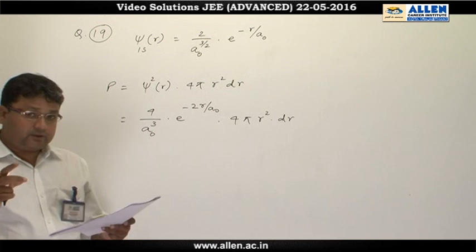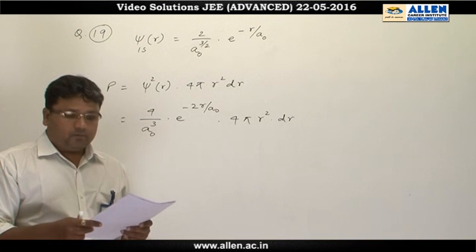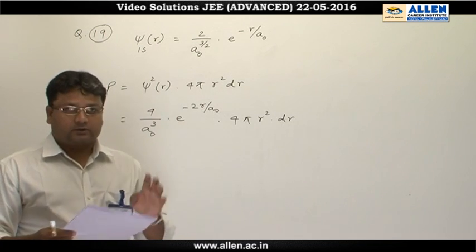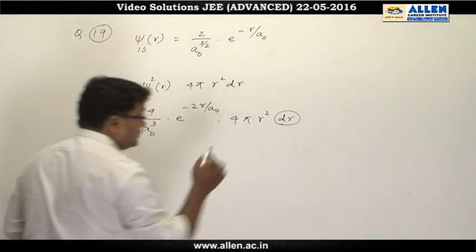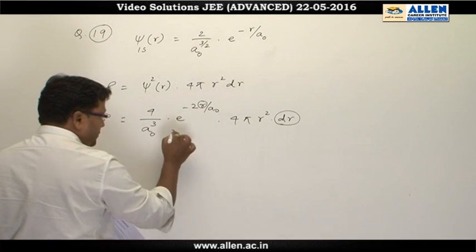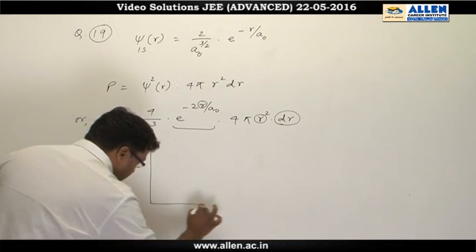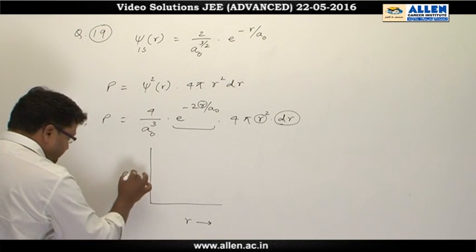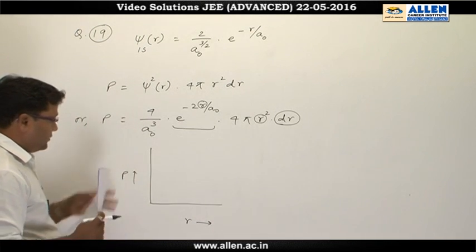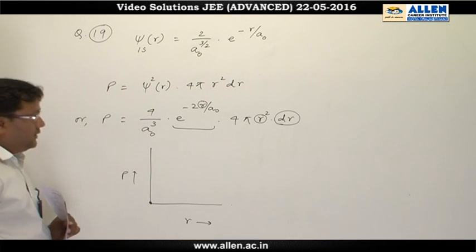The actual graph is always plotted keeping P/dr on the y-axis, but as the question gives a qualitative sketch, we may assume dr is throughout constant. If we consider dr throughout constant, the probability of finding the electron depends on the exponential function as well as r. When we plot the graph of r and P: when r equals 0, the probability of finding the electron will be 0, and when r is infinite, again the probability of finding the electron will be 0.